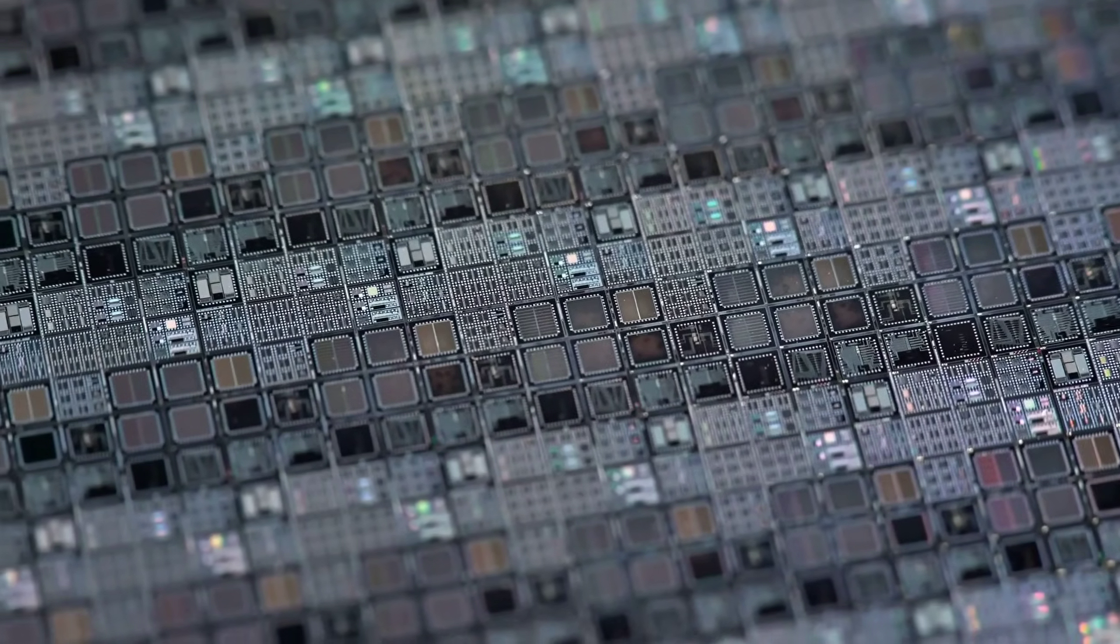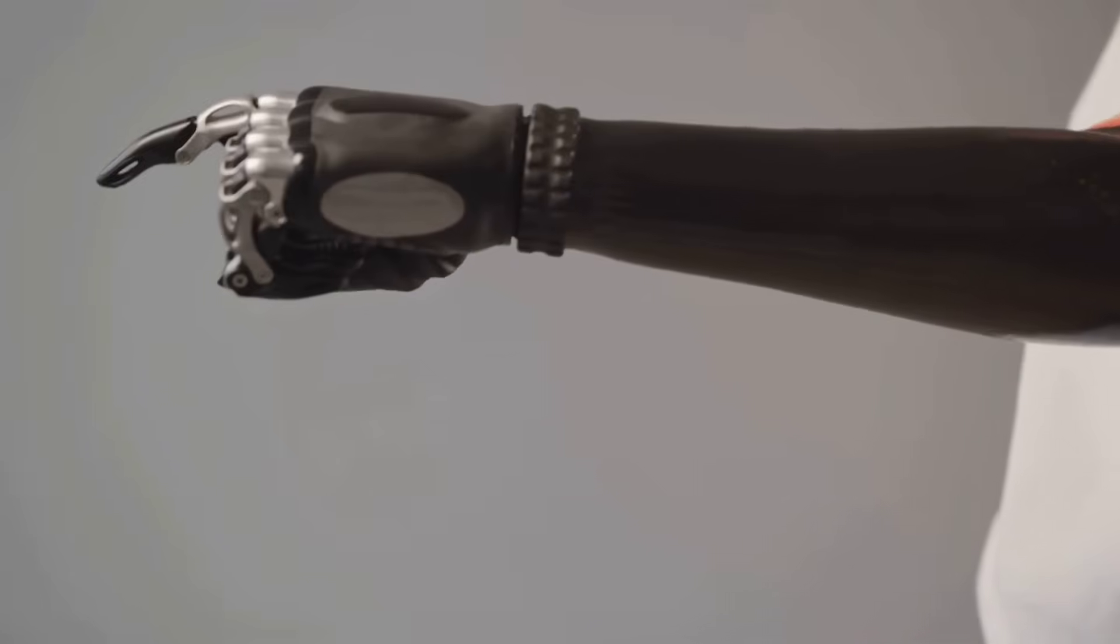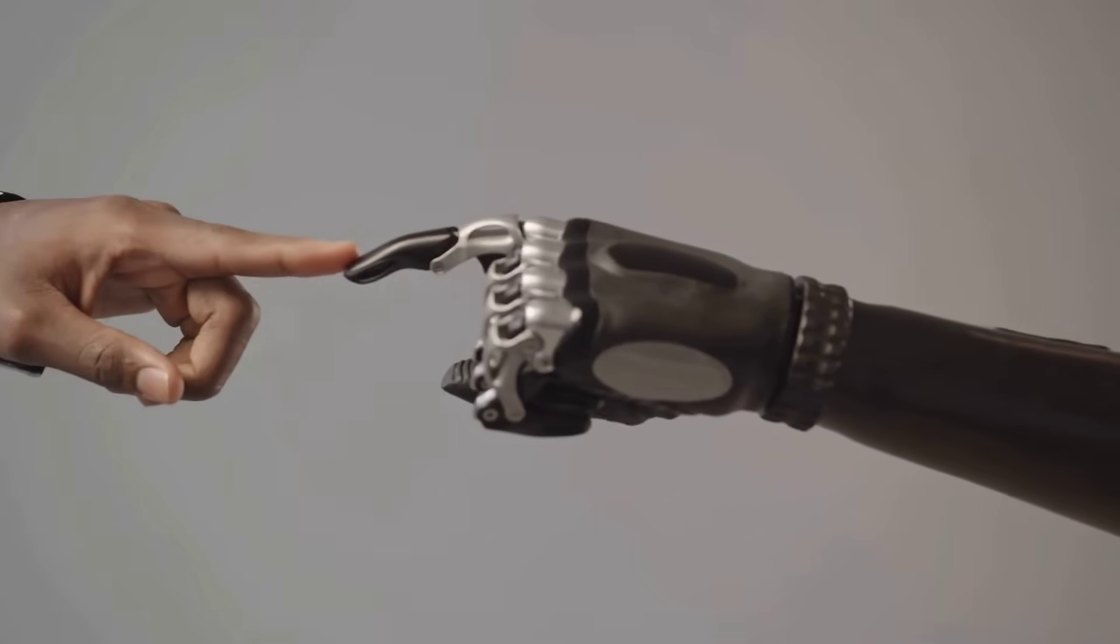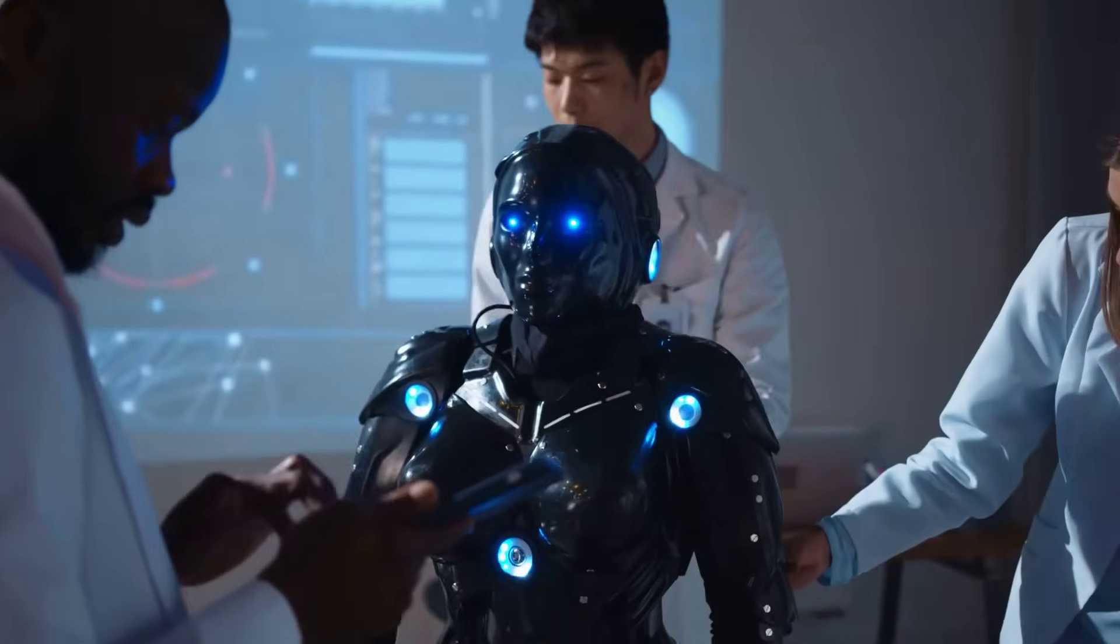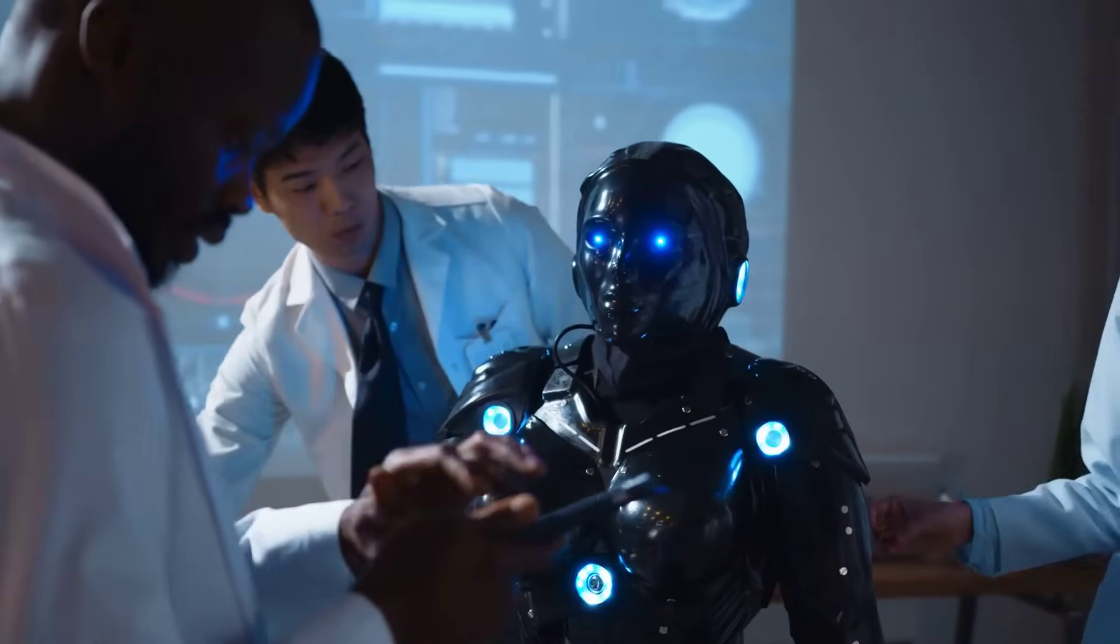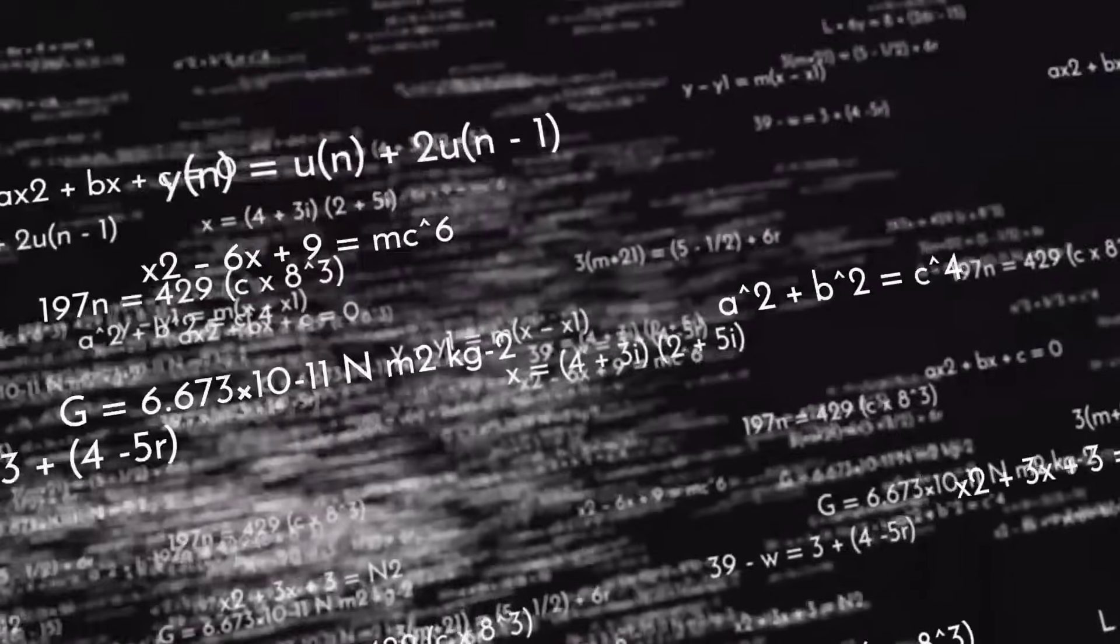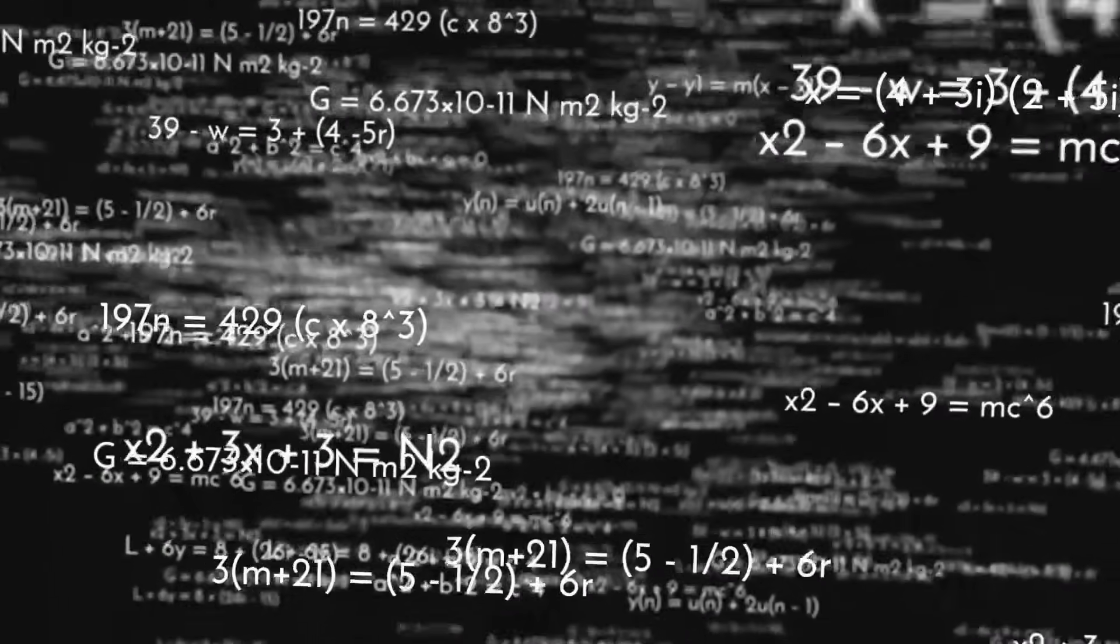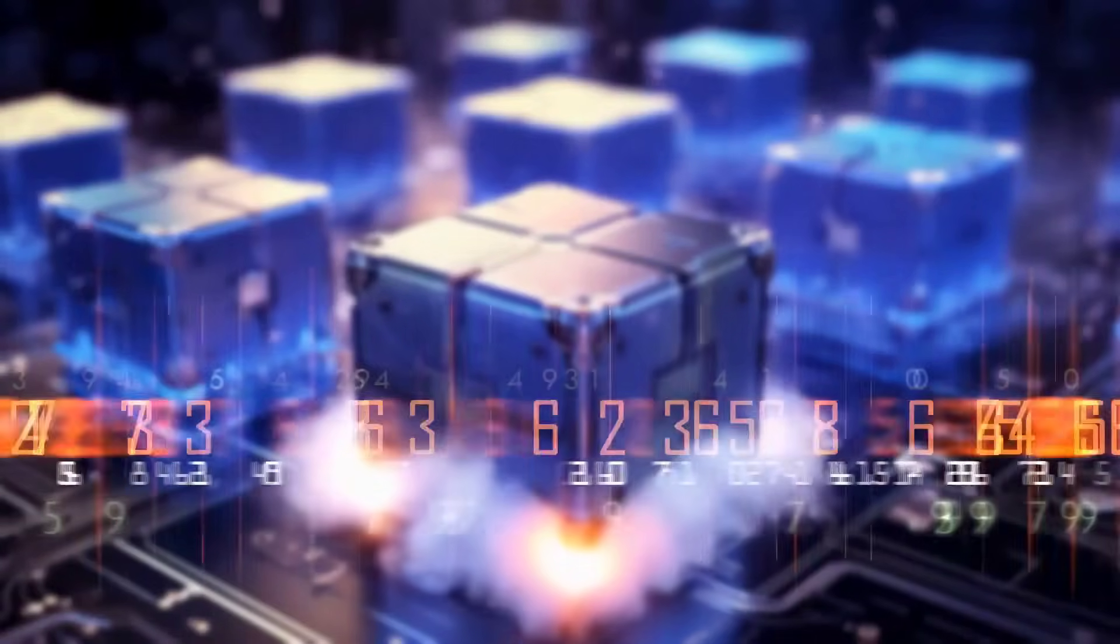What if I told you the future isn't digital or analogue? It's both. Stay with me, because this is where it gets really interesting. The smartest engineers in the world aren't asking which is better. They're asking, how do we use both? Think about it. Digital AI is great at precise calculations, logical reasoning, and storing exact information. Analogue AI is amazing at pattern recognition, sensory processing, and energy-efficient computation.